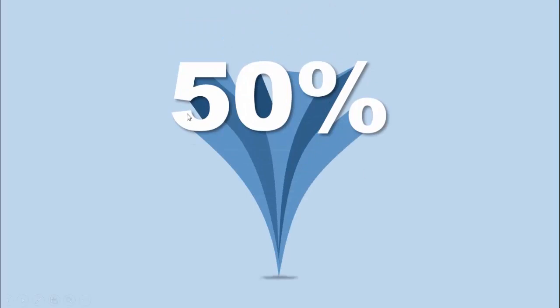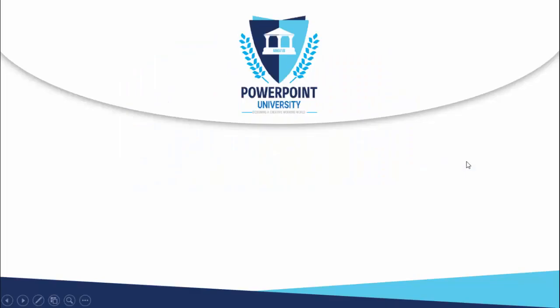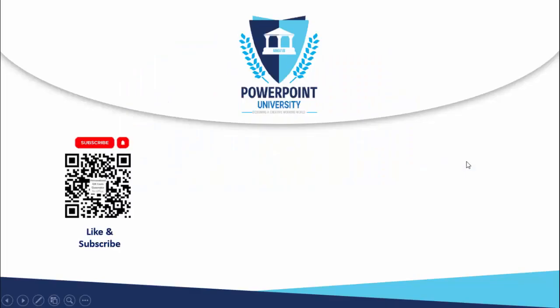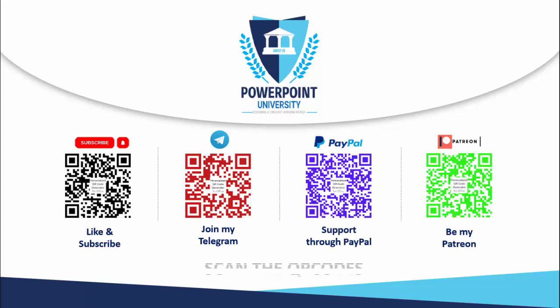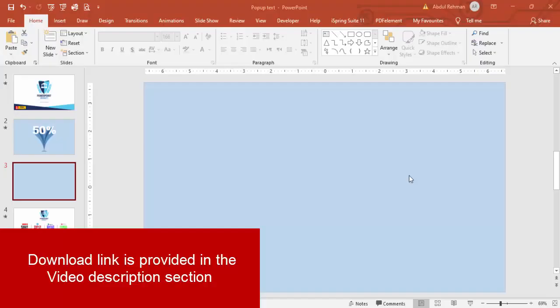In today's tutorial I'm going to show you how to create a pop-up text slide in PowerPoint. When I click, you can see it come up — I have put 50 percent, you can change the text according to your requirement, and it looks like it's coming from the bottom up. If you haven't subscribed to my channel PowerPoint University please subscribe, enable the bell notification, join my Telegram group, and if you'd like to support the channel you can do so through PayPal or Patreon.